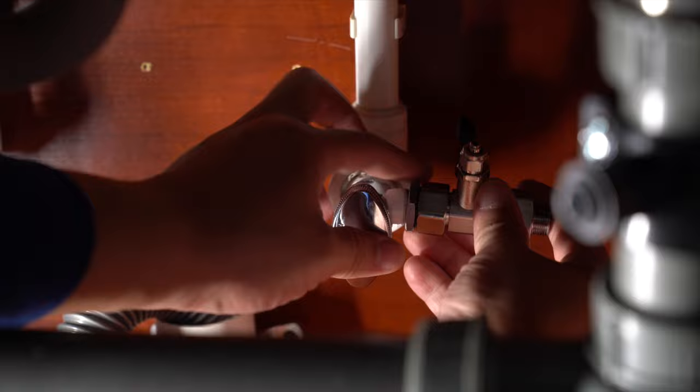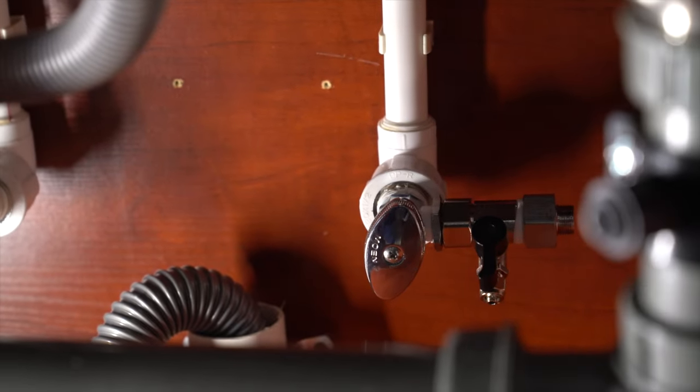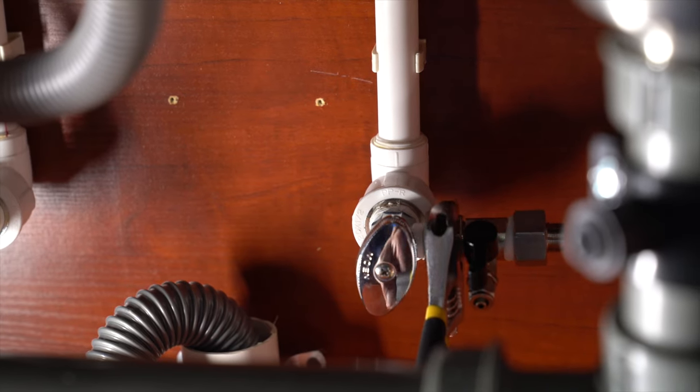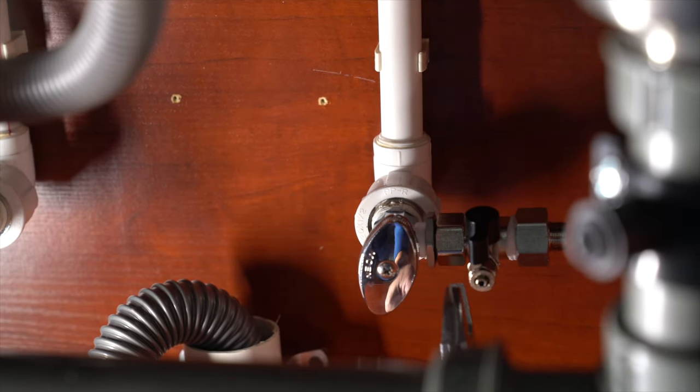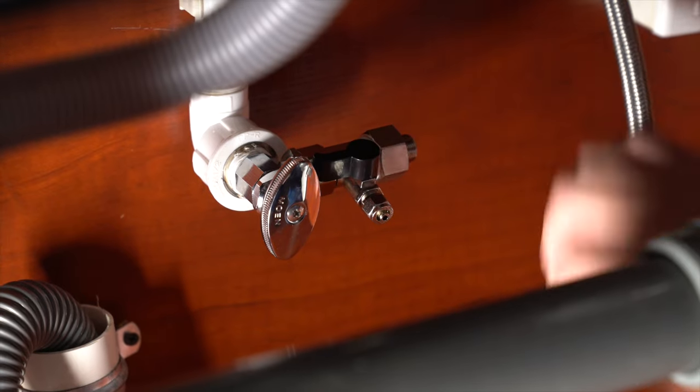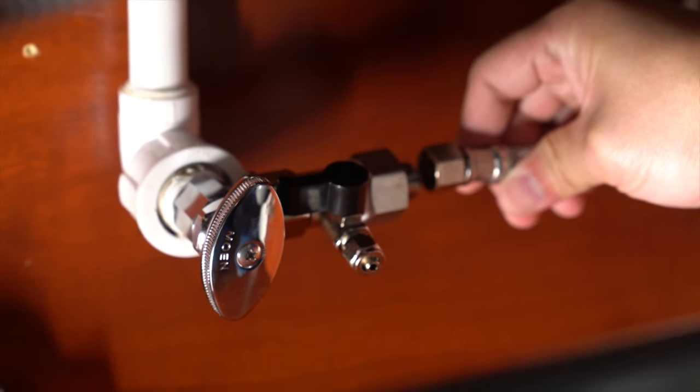Now apply Teflon tape around the male threaded outlet of the cold water valve. Connect the feed water adapter valve and tighten with a wrench. Now connect the existing tubing and tighten.